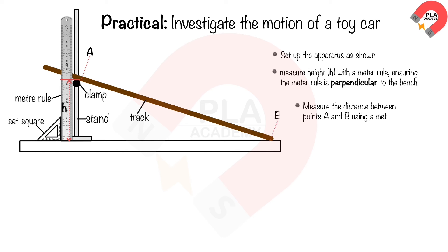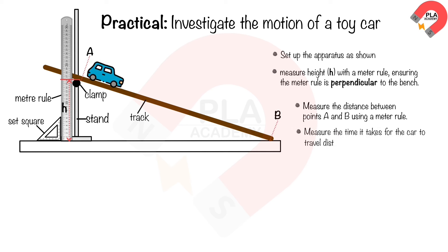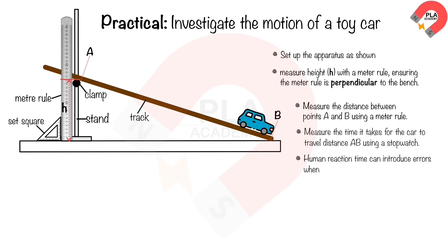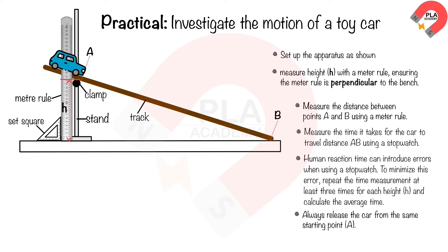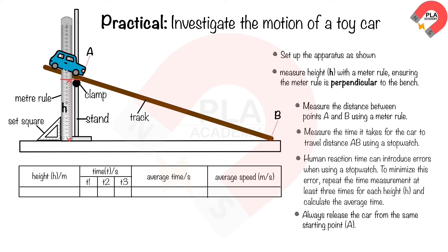Measure the distance between points A and B using a meter rule. Measure the time it takes for the car to travel distance AB using a stopwatch. Human reaction time can introduce errors when using a stopwatch. To minimize this error, repeat the time measurement at least three times for each height h and calculate the average time. Always release the car from the same starting point A. Record your results in a table, then calculate average speed using: average speed = distance AB / time taken.